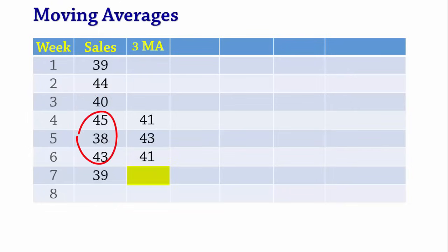For week 7, it is 45 plus 38 plus 43 divided by 3 which gives 42. And finally, the moving average forecast for week 8 is 38 plus 43 plus 39 divided by 3 which gives 40.